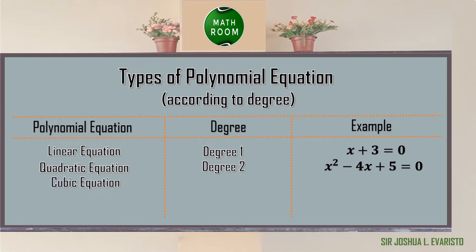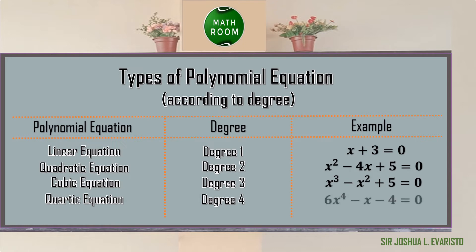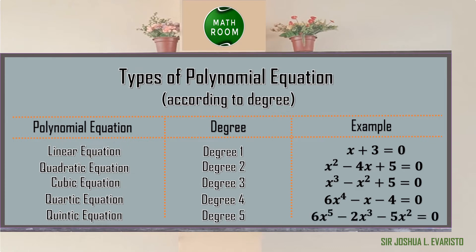A cubic equation has degree 3, for example x cubed minus x squared plus 5 equals 0. A quartic equation has degree 4, for example 6x to the 4th minus x minus 4 equals 0. Lastly, a quintic equation has degree 5, for example 6x to the 5th minus 2x cubed minus 5x squared equals 0, where 5 is the highest exponent.